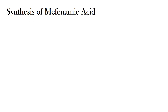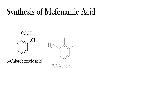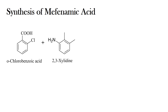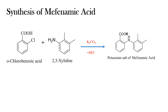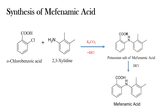Now coming to the synthesis of Mephenamic Acid. Mephenamic Acid is synthesized from ortho-chloro-benzoic acid. It is prepared by condensation with 2,3-xylidine in the presence of potassium carbonate. The resulting compound is the potassium salt of Mephenamic Acid. This potassium salt is then treated with hydrochloric acid to obtain Mephenamic Acid.